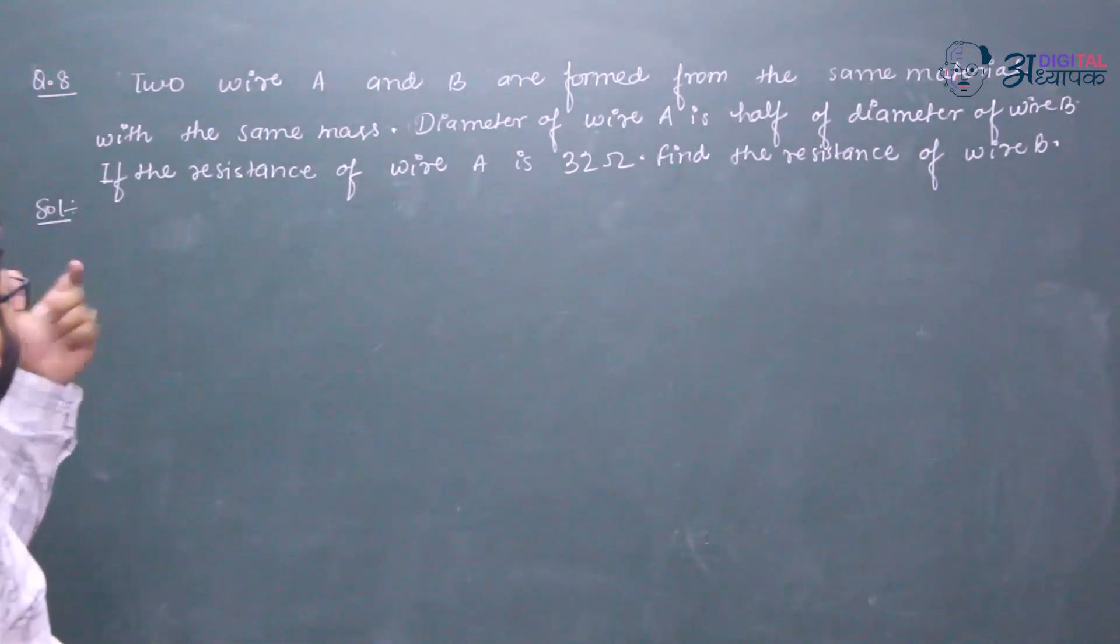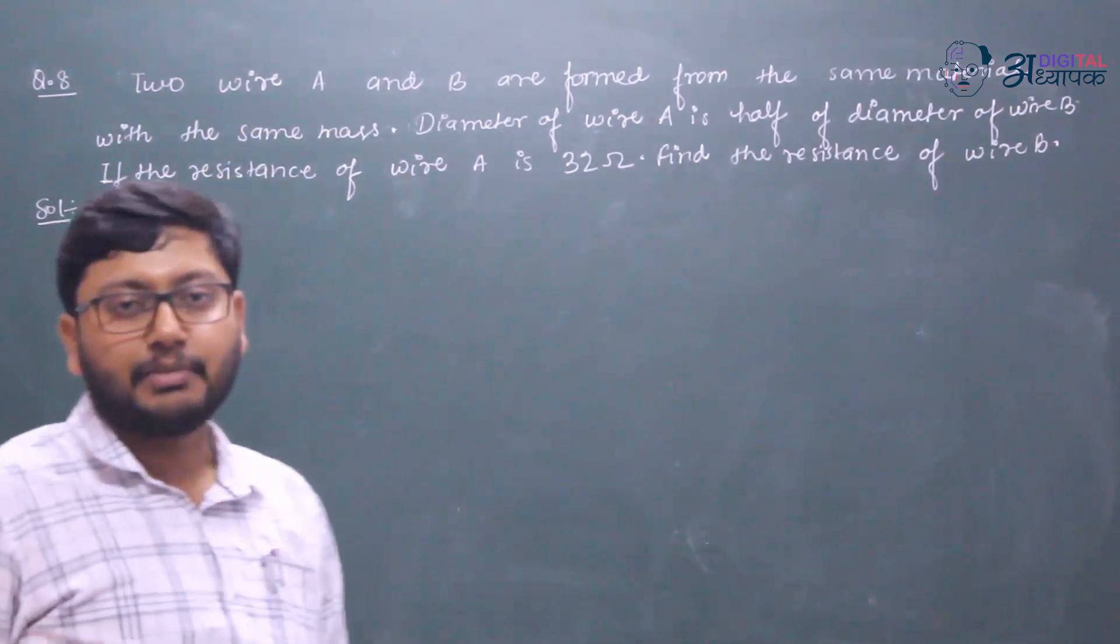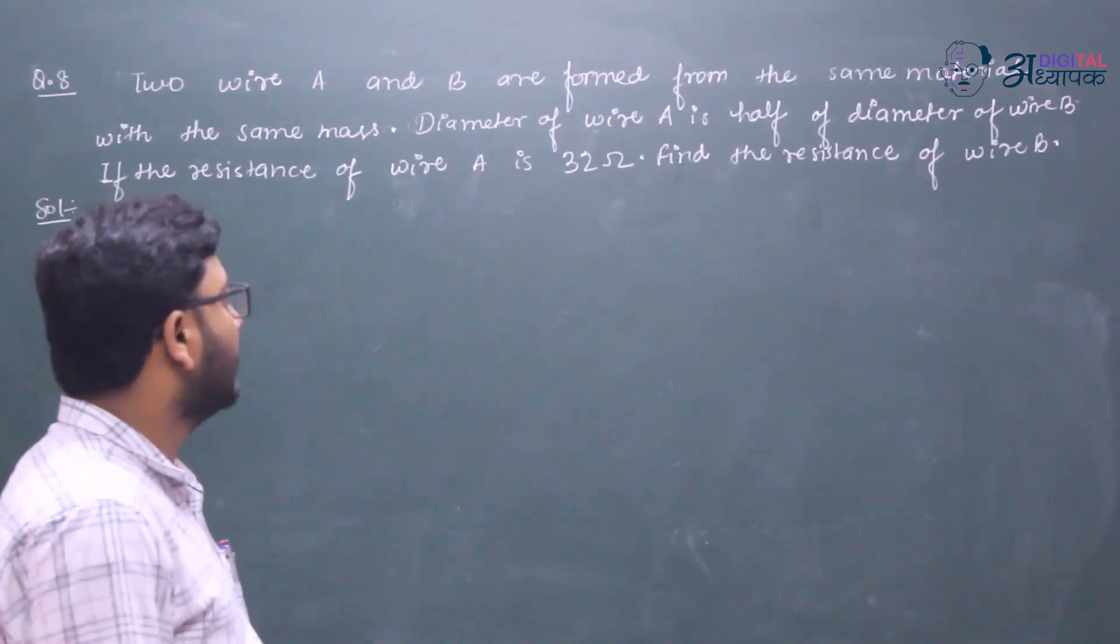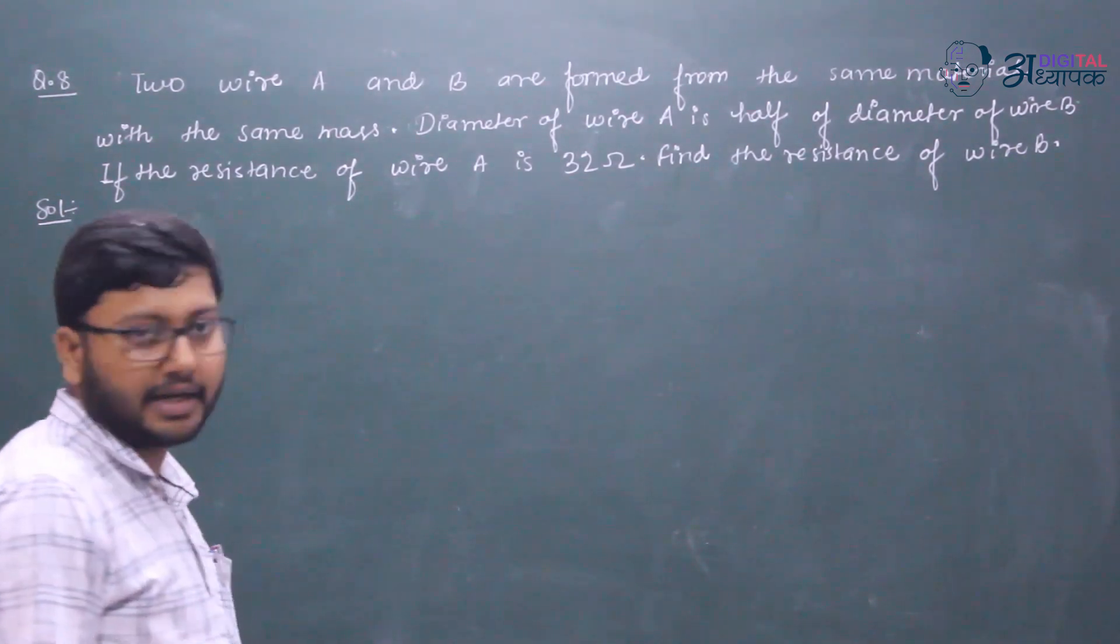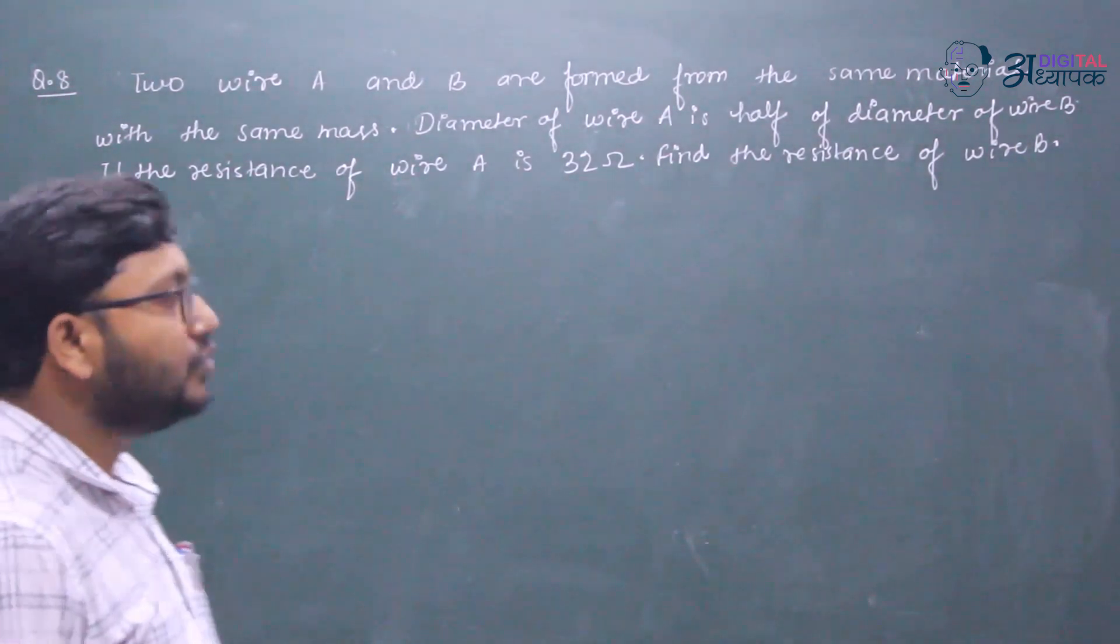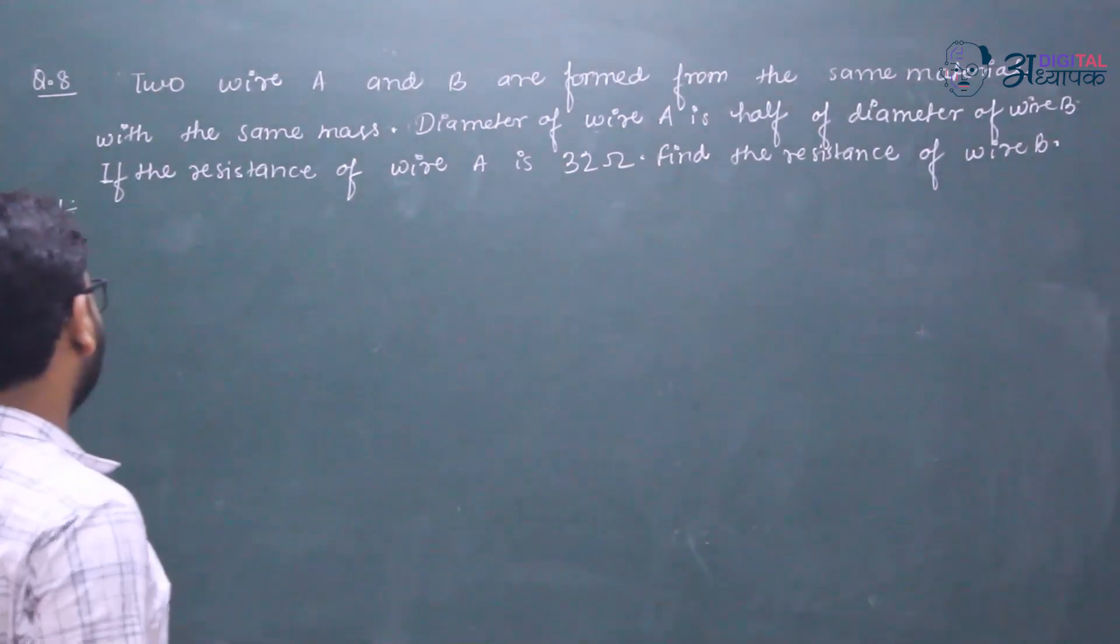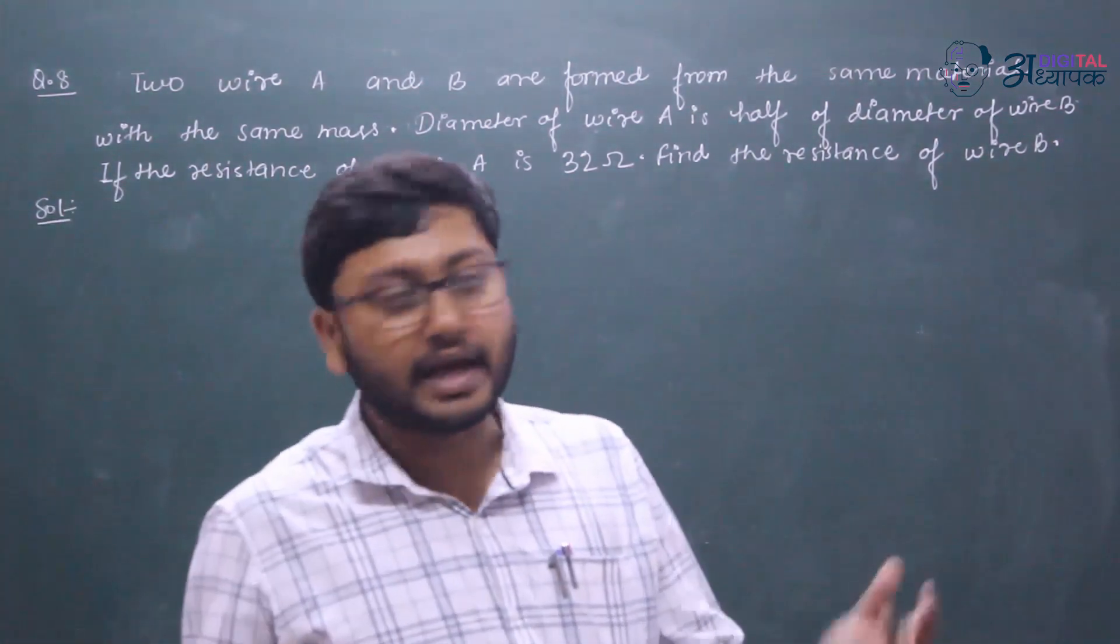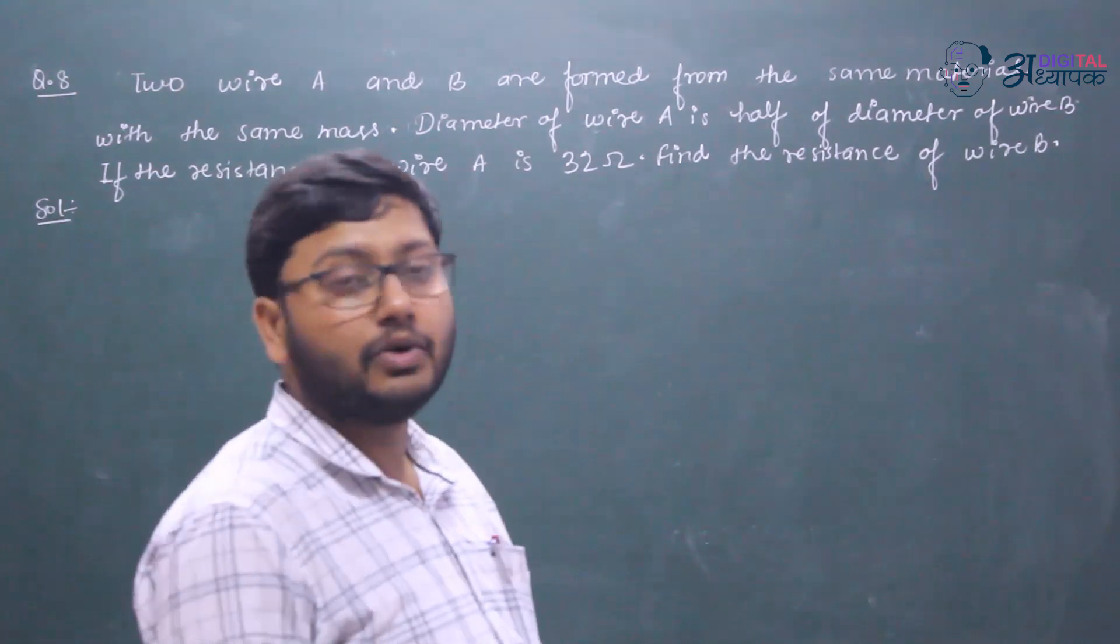The question is that wire A and wire B both have the same mass. The first wire diameter is half the other wire B diameter. So if wire A is 32 ohm, find wire B.